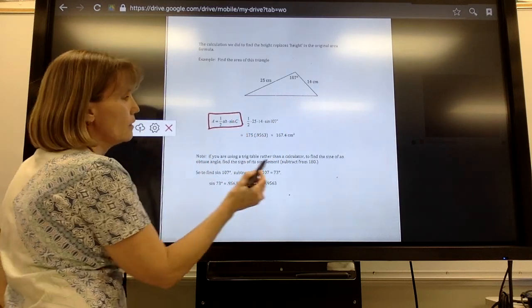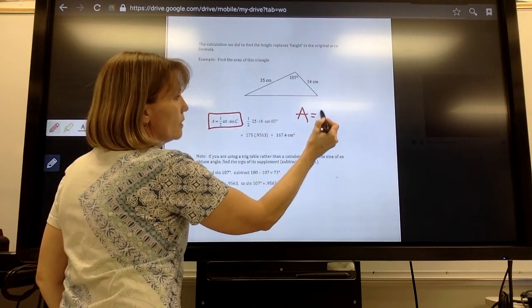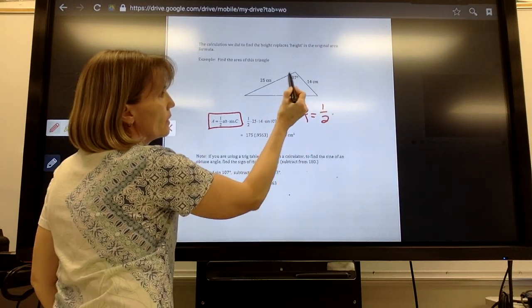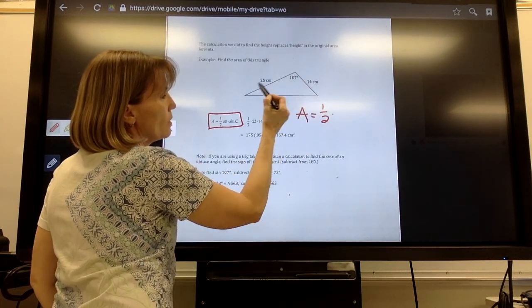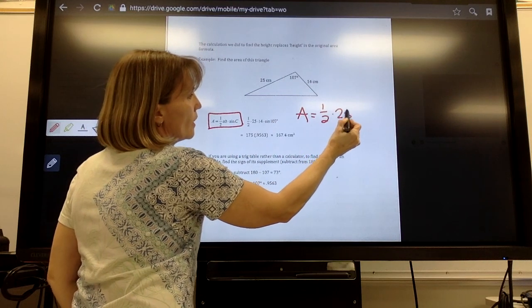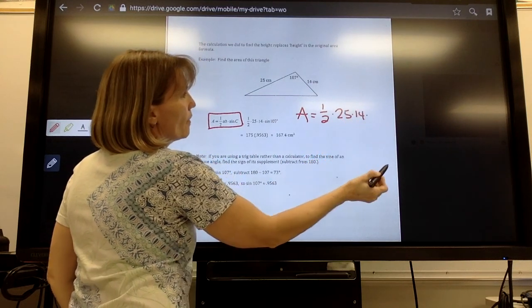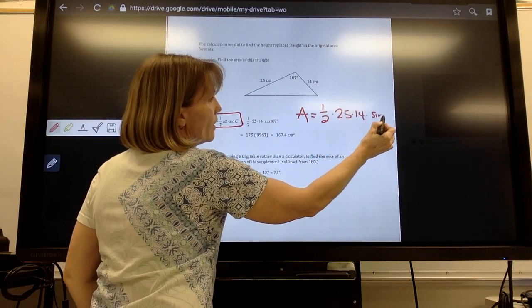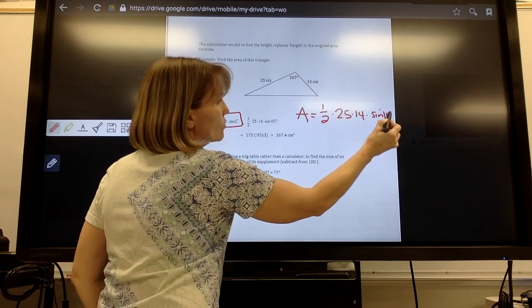Here's that formula again. So I'd say area is going to equal one-half times A times B. And again, side lengths are A and B. It doesn't matter which one's A and which one's B. And then you're going to take it times the sine of the angle, 107 degrees.